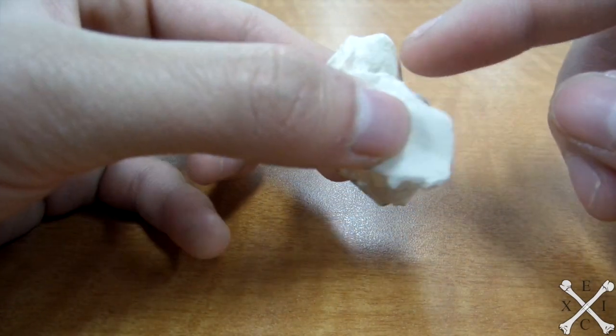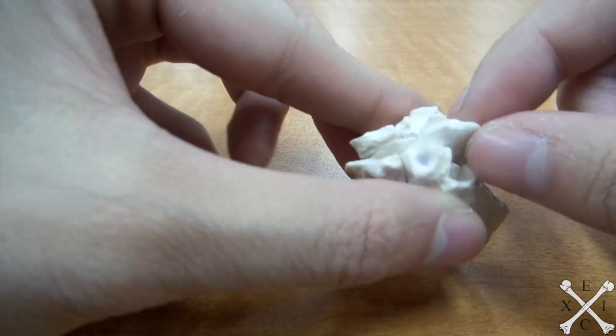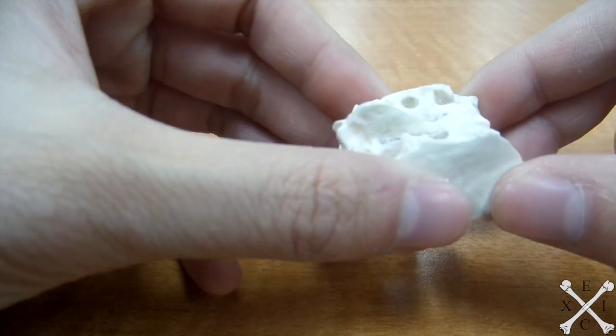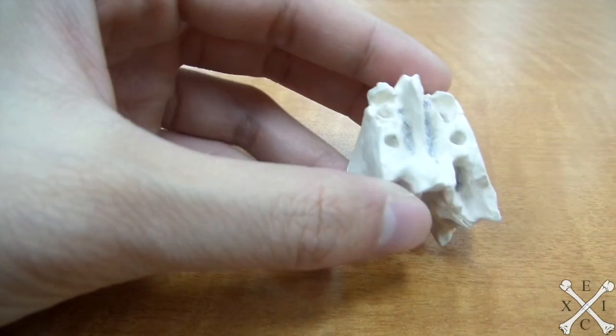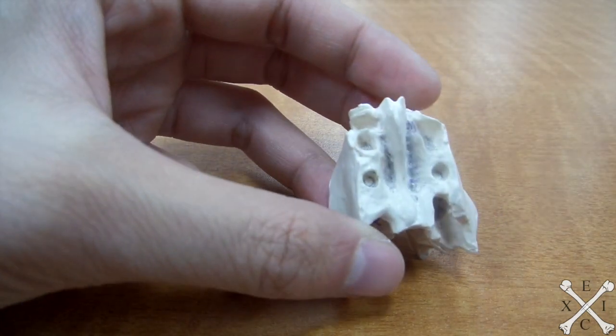Next one is your crista galli. Crista galli is this weird structure up here, and the next one is your cribriform plate, or you can also call it your horizontal plate.